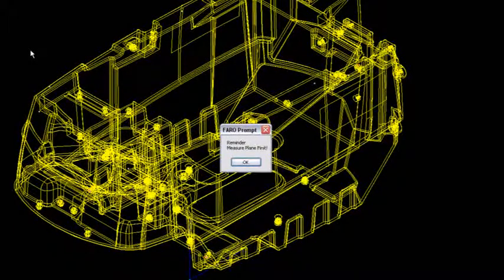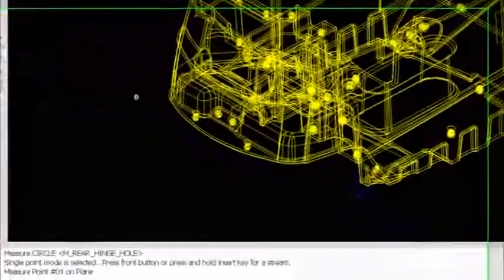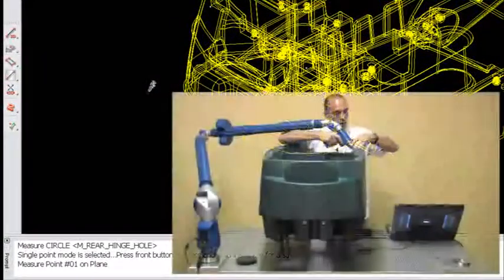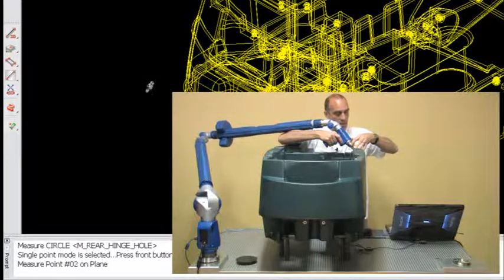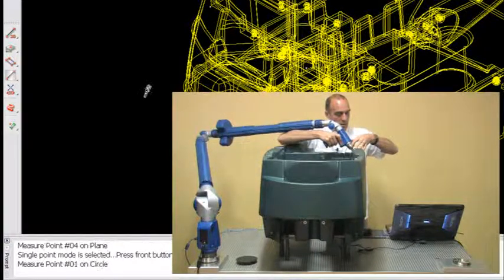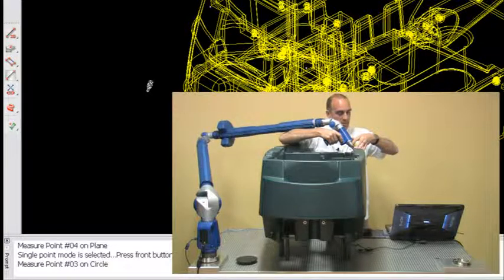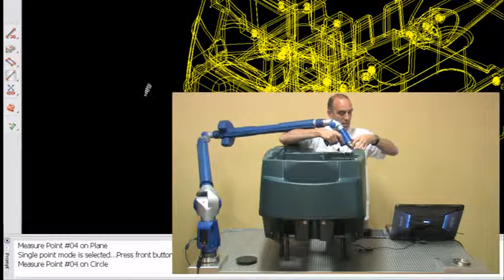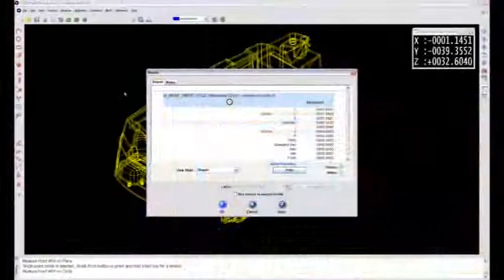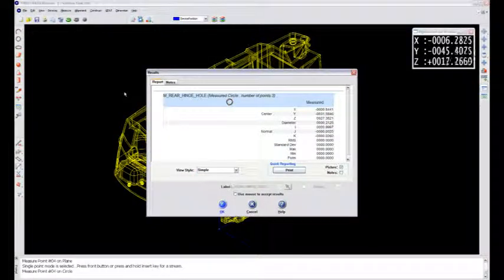Now it's the reminder again. Shoot the plane. And it's this rear hinge hole here. There is the plane definition and there is the circle definition. There's the new point for it. I'll say okay.